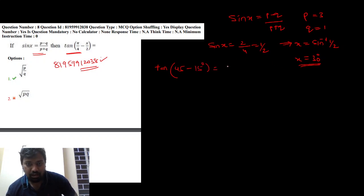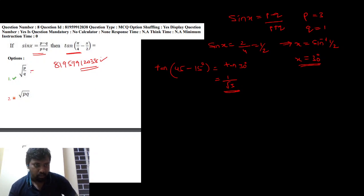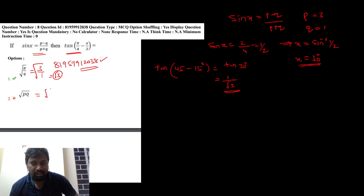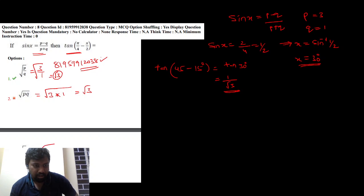So the answer is equal to tan 30 degrees = 1/√3. Option A is equal to 1/√3. That is the answer. Root p/q is equal to √(3/1) = √3, and 1/√3 is not equal to √3. The answer is root q/p.